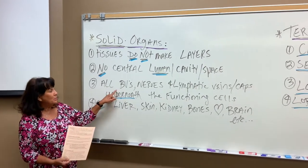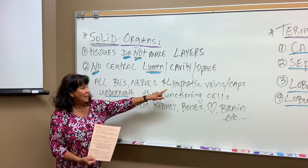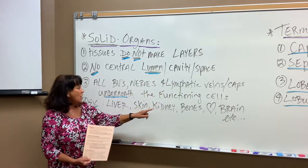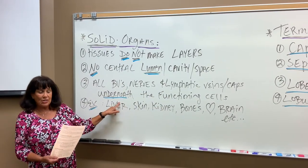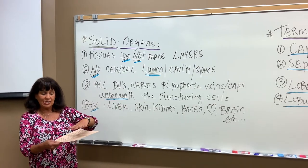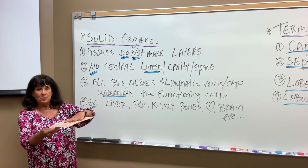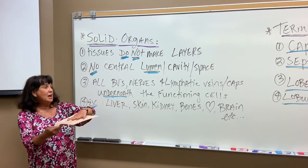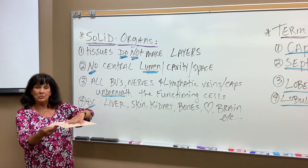There are blood vessels, nerves, and lymphatic veins underneath the functioning cells. So if my hand is the functioning cells, this would be the supportive layer of tissue that's underneath.